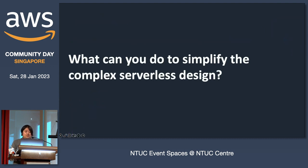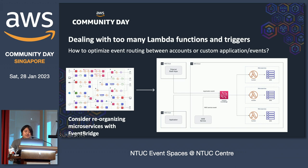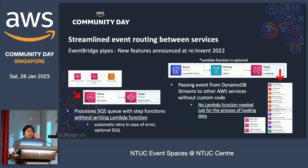What can you do to simplify complex serverless design? The first thing I would note is to reorganize unnecessary Lambda functions and triggers. Just like program source code needs refactoring sometimes, I suggest considering reorganizing your Lambda functions and other services with Amazon EventBridge. An effective way to reduce unnecessary Lambda functions and triggers is using EventBridge Pipes, which was announced at re:Invent 2022. EventBridge Pipes connects event sources to targets with data filtering and mapping tools, so you don't need to write integration code or implement ETL processes yourself.